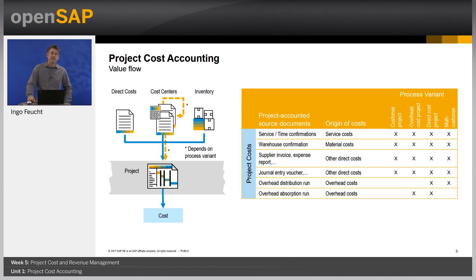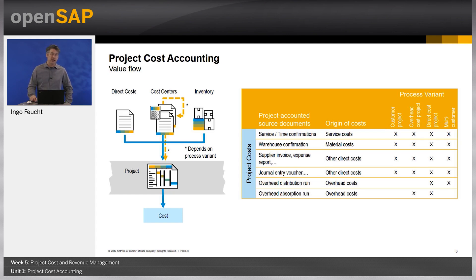Let's have a look at the financial value flow in Business by Design with regards to projects. Some of this has been already covered in Week 1. All project types can receive costs via service allocations — a cost center is credited and the project is debited. Also, all project types can consume stock materials and carry material costs. It is also possible to post supplier invoices, expense reports, or journal entry vouchers to all project types. With regard to overhead distributions and overhead absorptions, there are some differences between the project types.